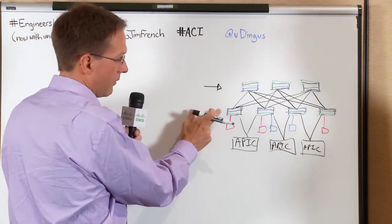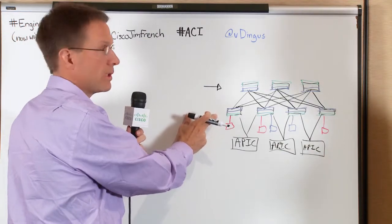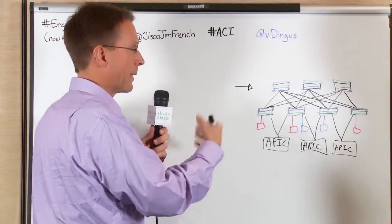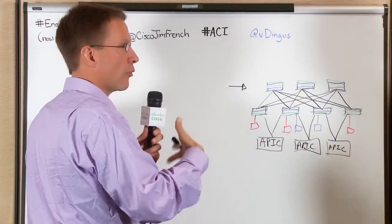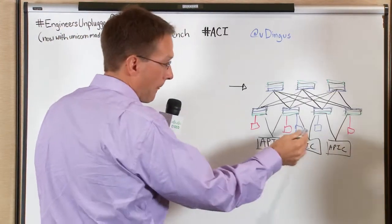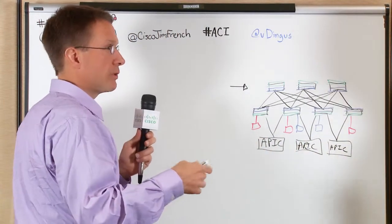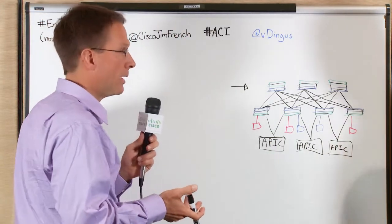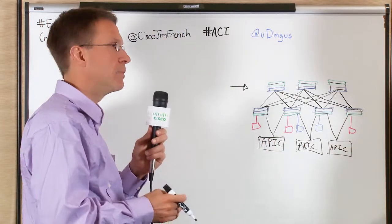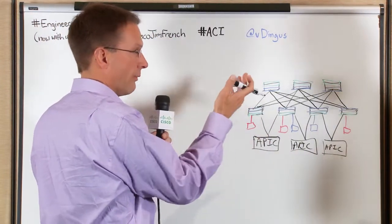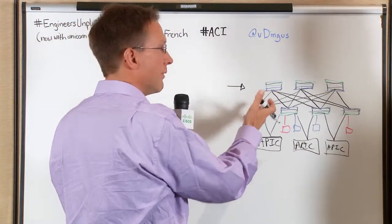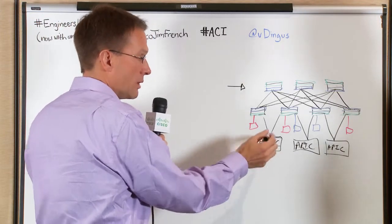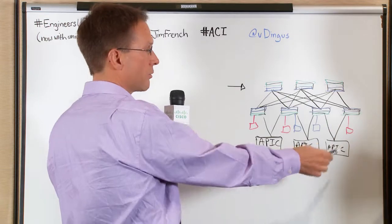We can scale not to the constraints of a physical switch chassis, but to our heart's content. We can continually add capacity to the switch infrastructure. We also have, like line cards in a switch, these leaf switches which plug into all the spines and provide additional bandwidth capacity, so we can incrementally add leaves and spines and grow beyond the constraints of a physical chassis. Rather than having a supervisor like in a typical switching scenario, we have an external controller called an Application Policy Infrastructure Controller. We use the word policy because it's not really about forwarding in the fabric.